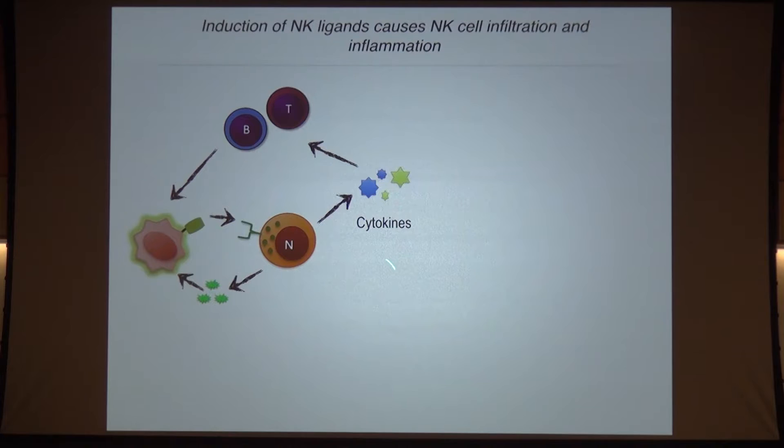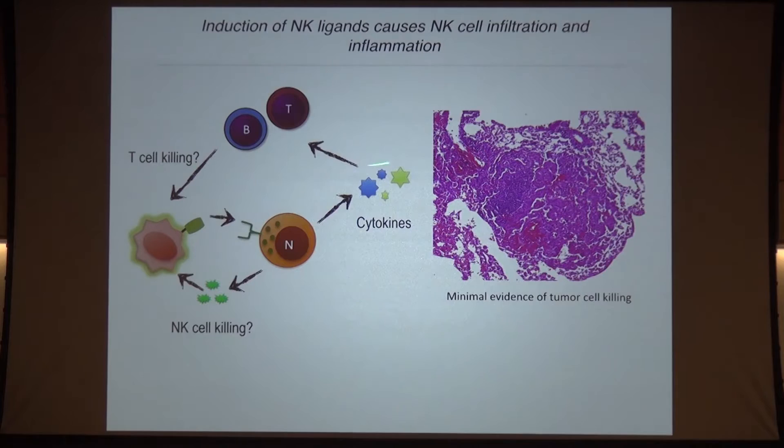So we've shown that NK cells, when attracted to tumors, can release cytokines and induce the influx of B cells and T cells. The big question was whether this induced killing. We thought we would see NK cell-mediated or T cell-mediated killing within those tumors. Unfortunately, we did not. You can see infiltration of lymphoid cells, but assays for anti-tumor effects — histological or cleaved caspase-3 — show rather little. So recruitment of NK cells, by themselves at least in this model system, seems insufficient to drive anti-tumor responses.